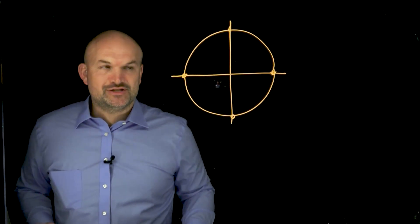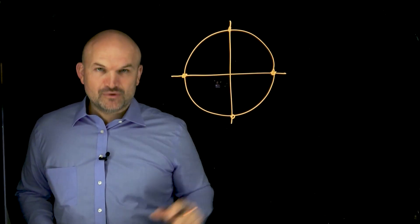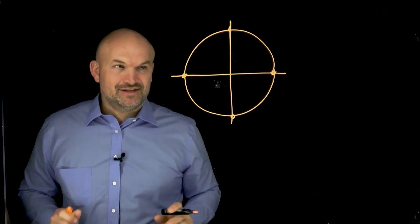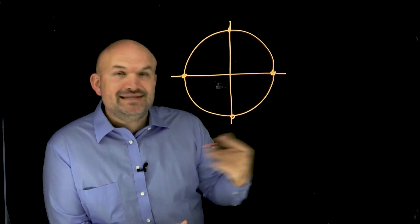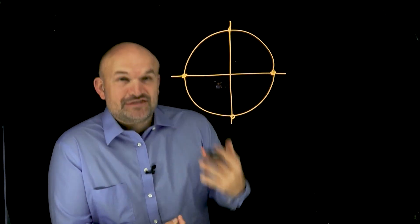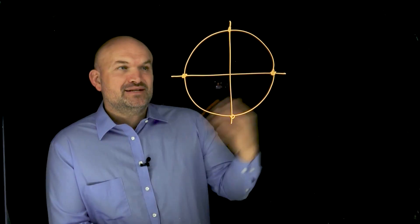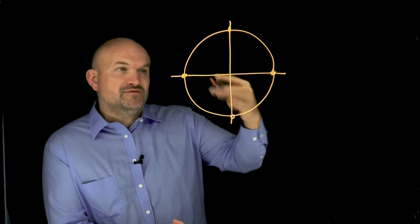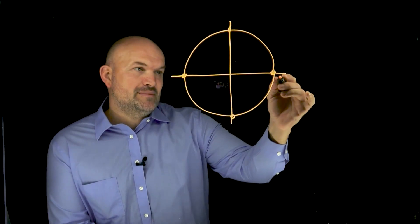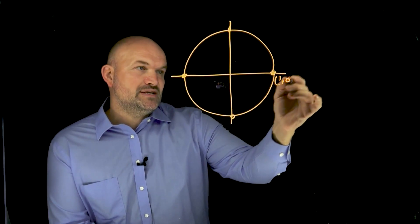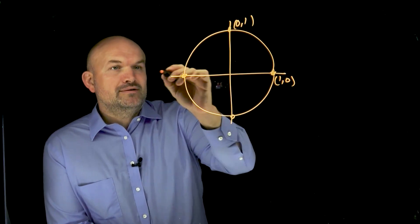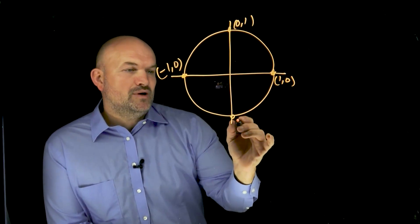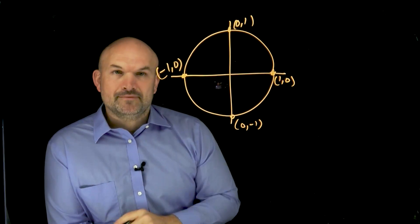If you know these four points, you can graph sine, cosine, and tangent fast and easily. The good thing about these four points is they're so easy to remember — you almost can't forget them. Because the radius of the unit circle is one, the four coordinate points are (1, 0), (0, 1), (-1, 0), and (0, -1).